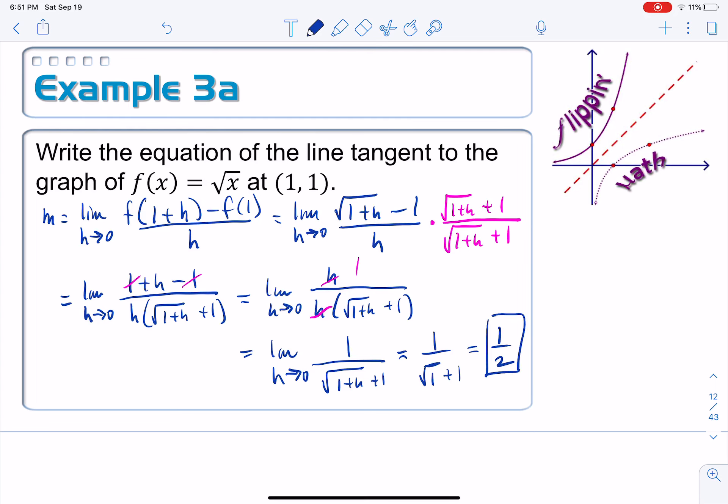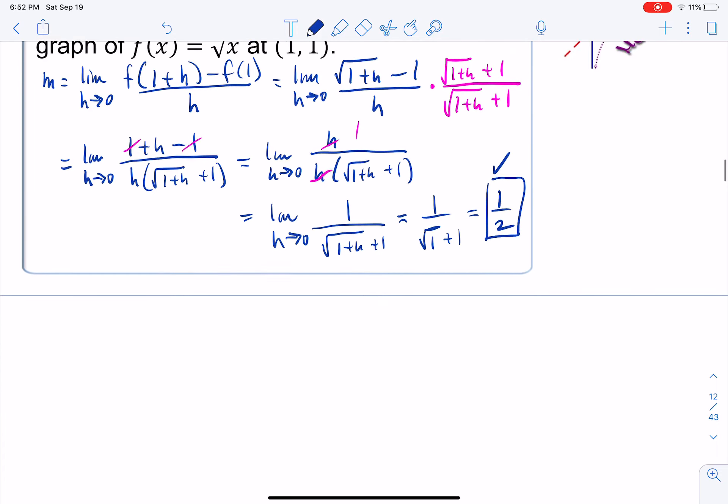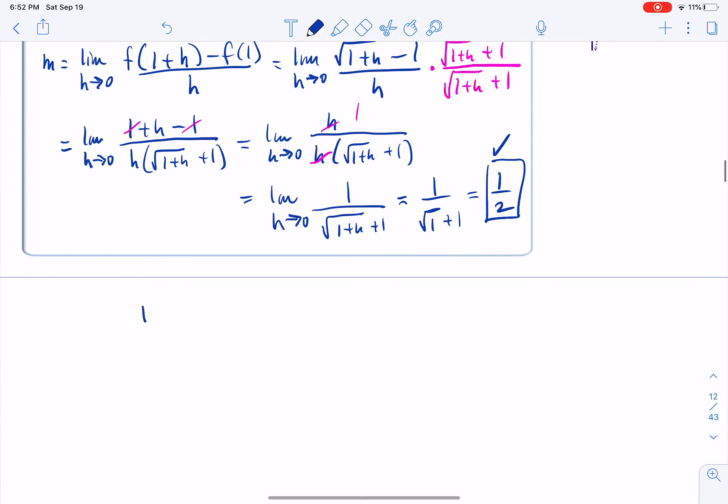Let's see. Are we done with this question? Let's go back here. Let's write the equation of the tangent line. No. Not quite done. Here's our point. Here's our slope. Let's put both of those things together in point-slope form to come up with y minus 1 is equal to 1 half (x minus 1).